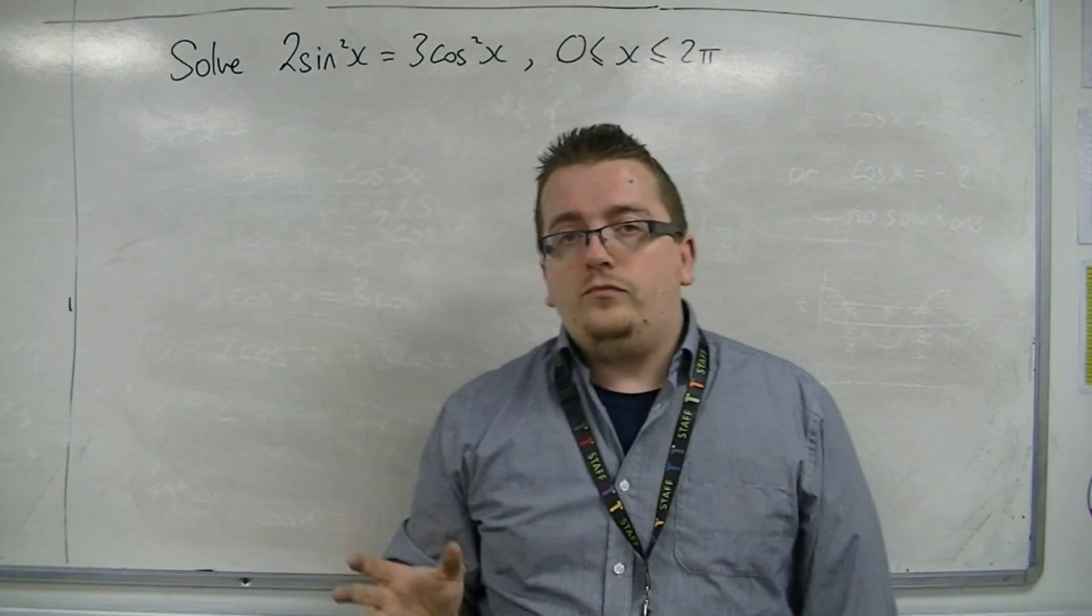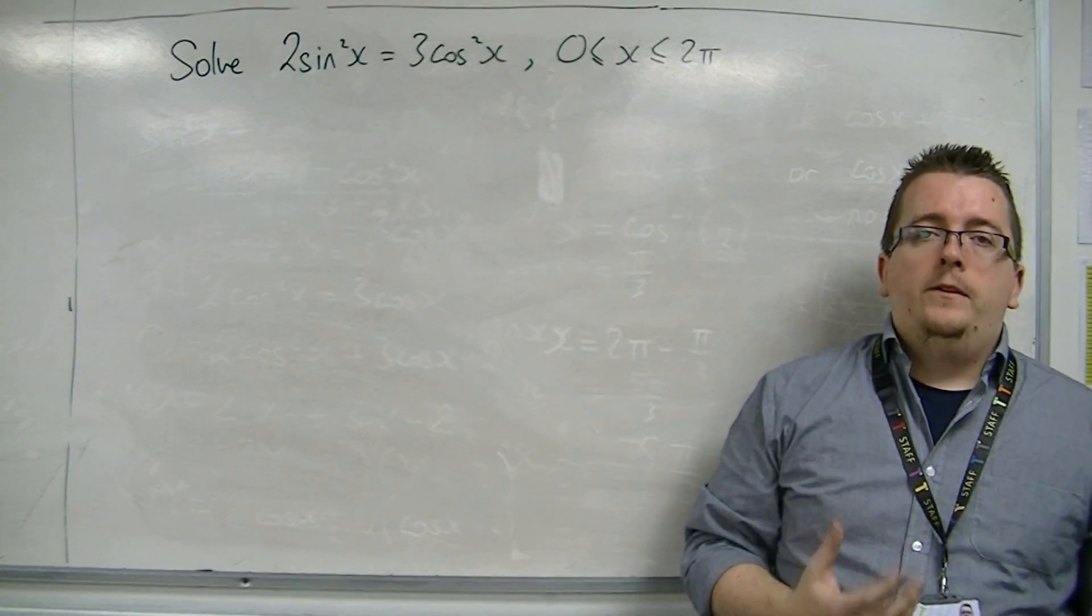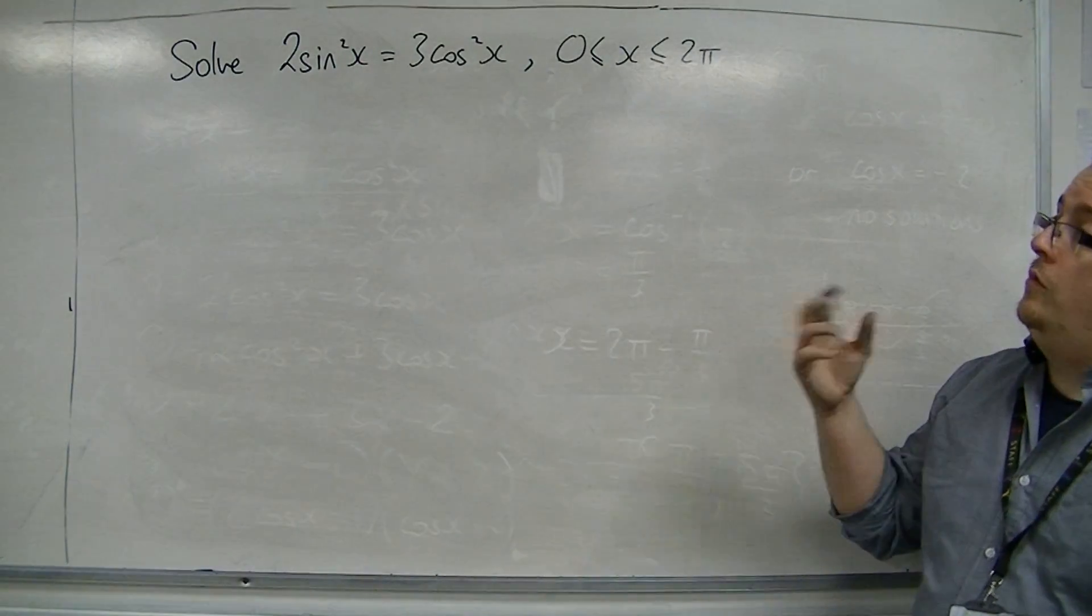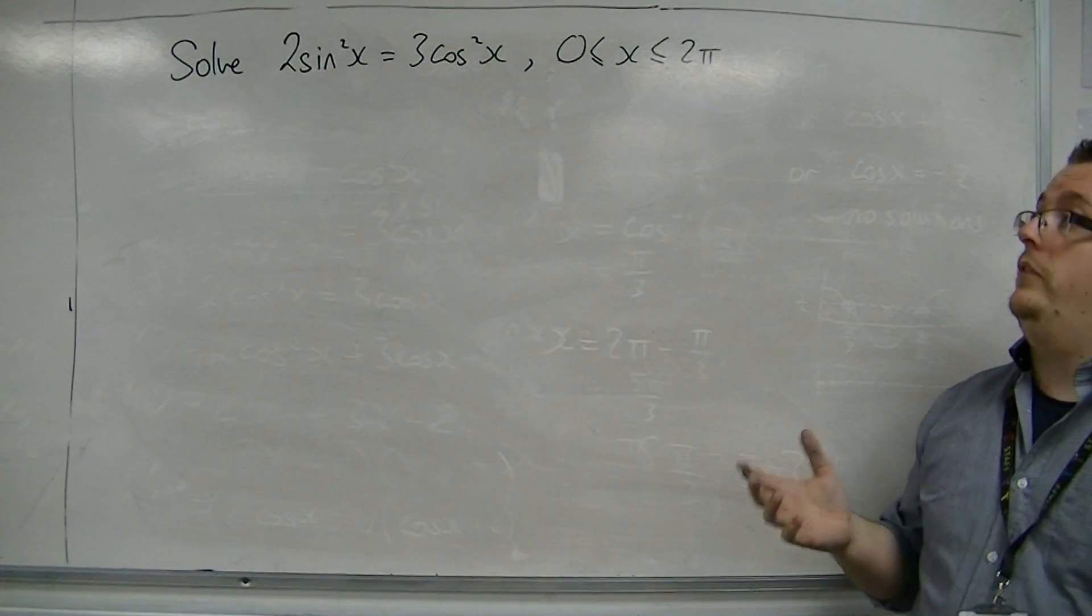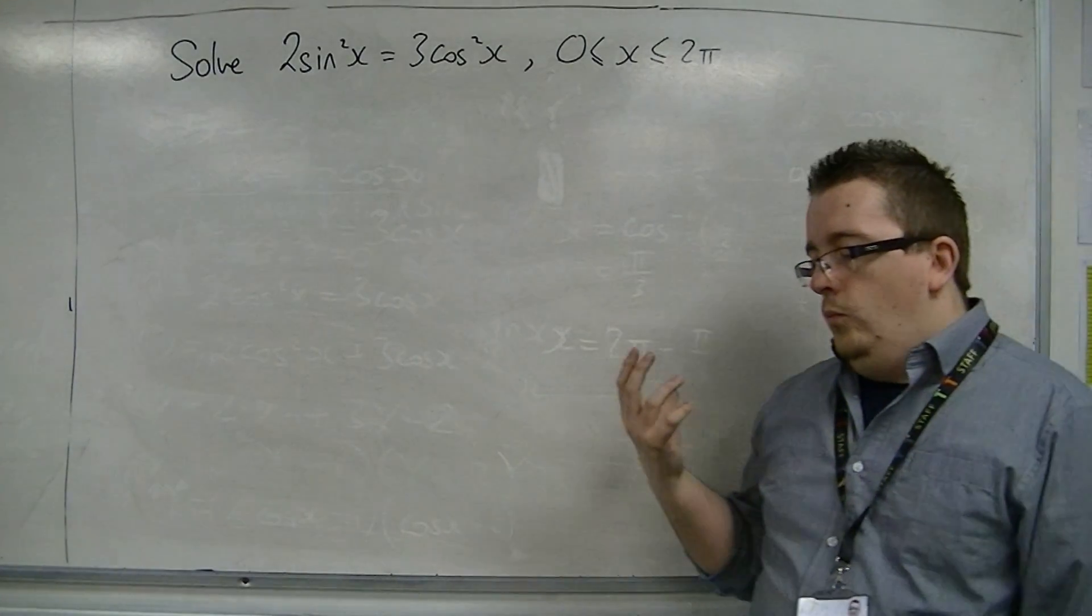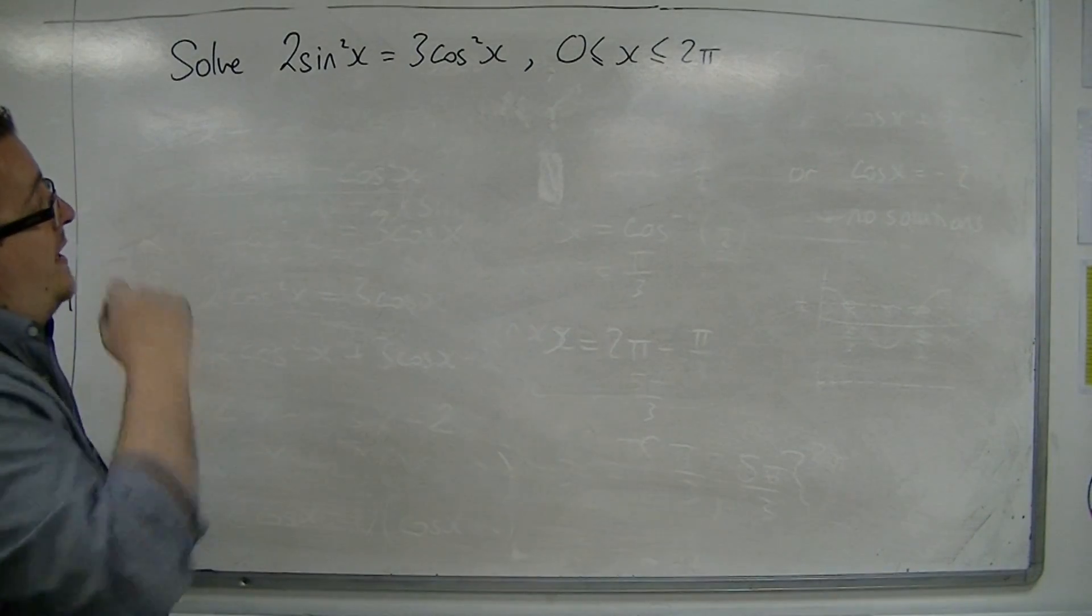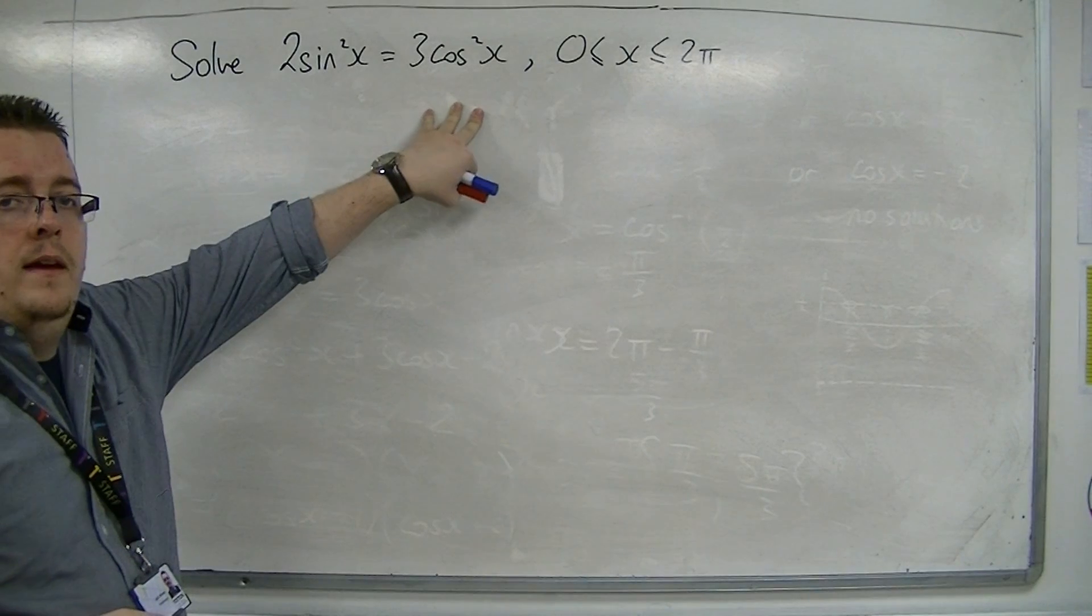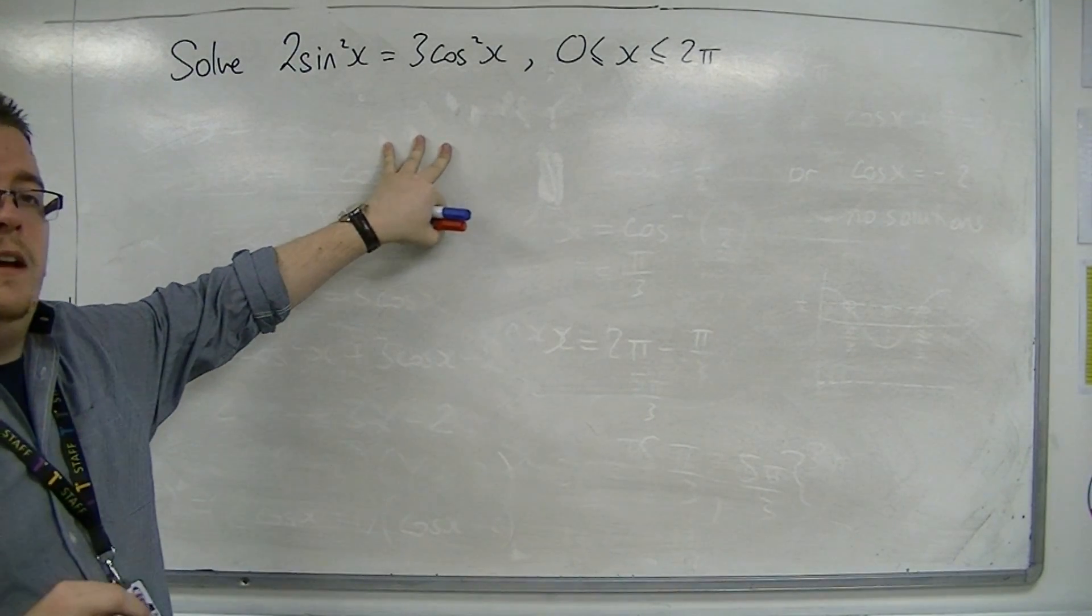What I want to stop you from doing is jumping to the conclusion that a good idea here would be to replace sine squared with 1 minus cos squared, like we did in the previous video. I'm not going to do it that way, because what I can see is that I've got a sine squared and a cos squared, and if I get sine squared over cos squared, then I'm going to have tan squared.